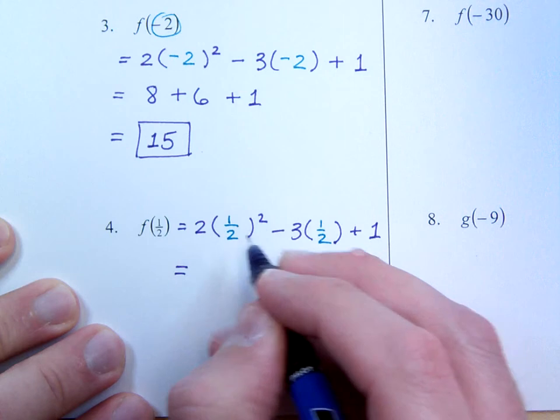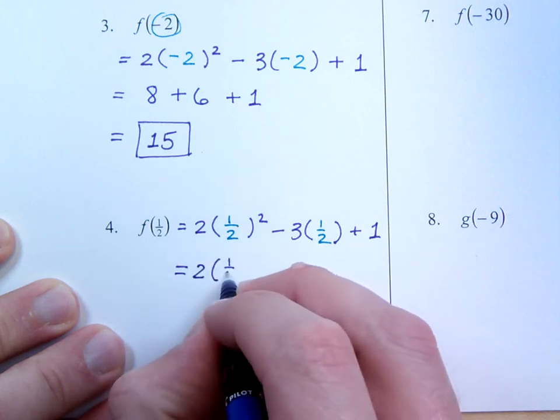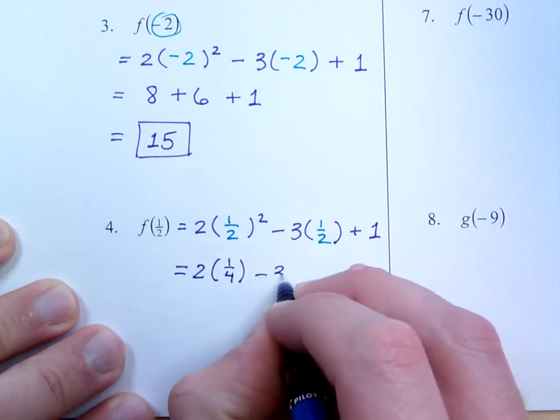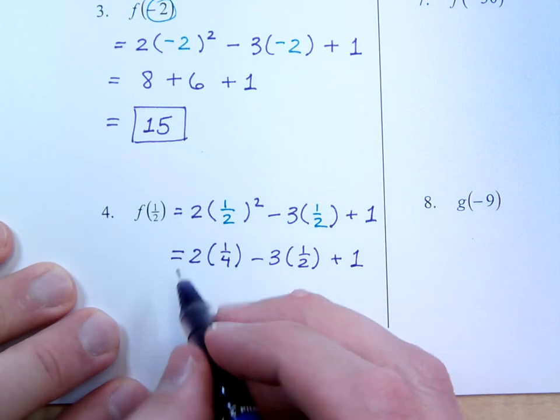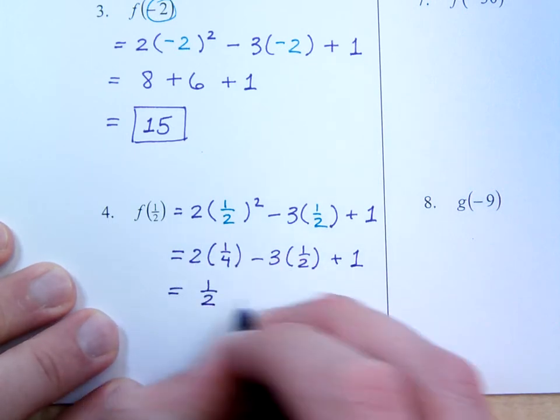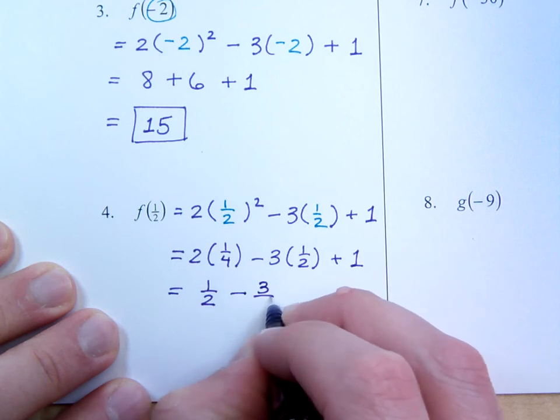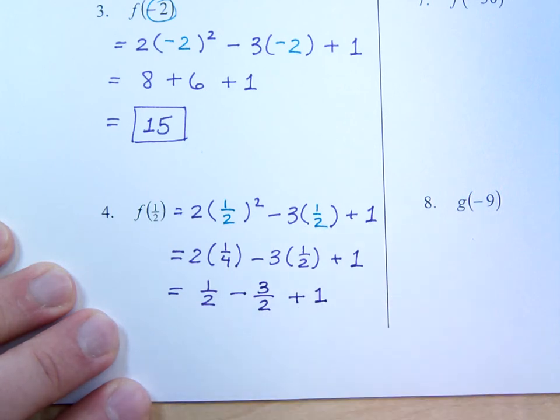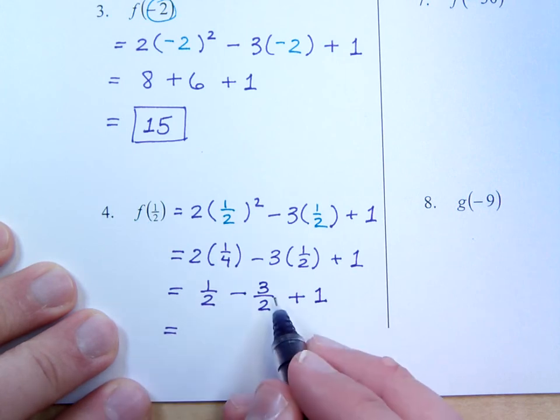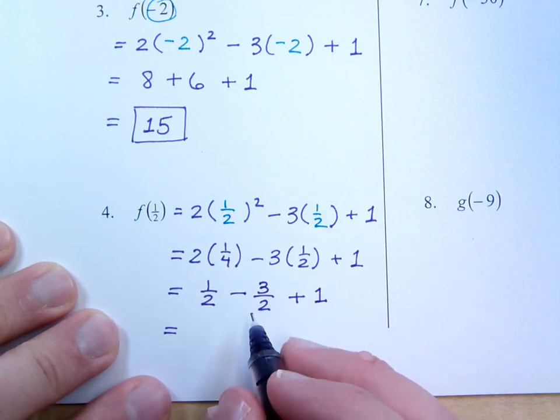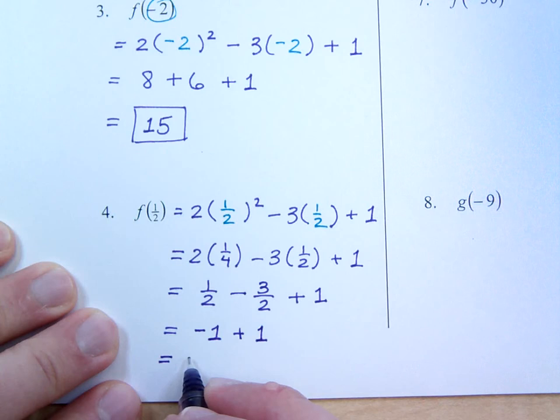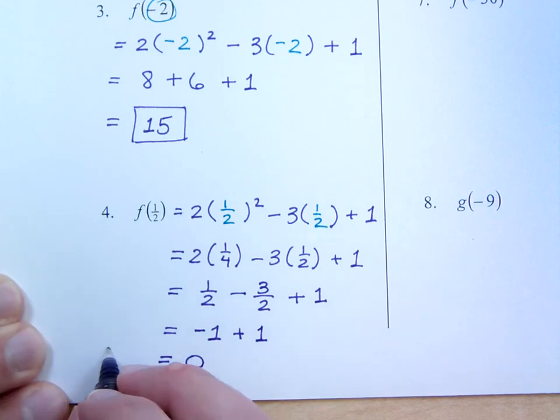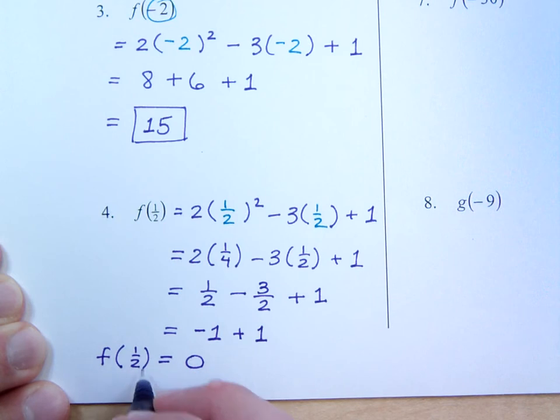Now here, 1 half squared is going to be 1 fourth. So this is 2 times 1 fourth minus 3 times 1 half plus 1. So 2 times 1 fourth gives us 1 half, and then 3 times 1 half is minus 3 halves plus 1. Now 1 half minus 3 halves is a negative 2 halves which just reduces to negative 1. So negative 1 plus 1 is equal to 0. So that means that f evaluated at 1 half is 0.